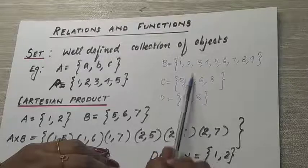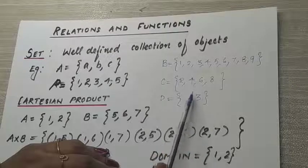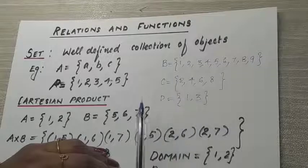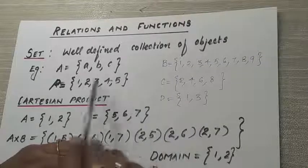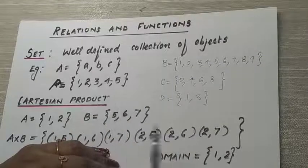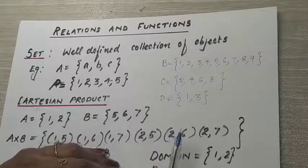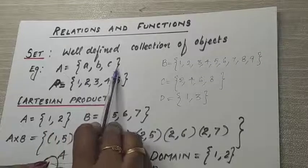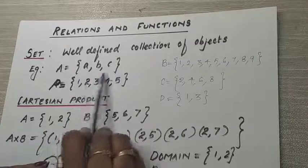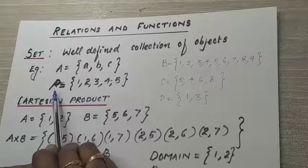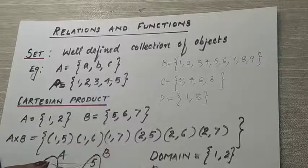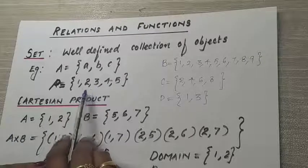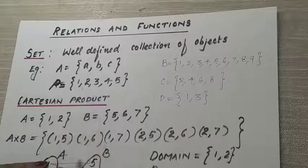These are examples of a well-defined collection — so these are sets. A few more examples: set A = {A, B, C} (the alphabets A, B, C), set P = {1, 2, 3, 4, 5} — like these few sets written here.